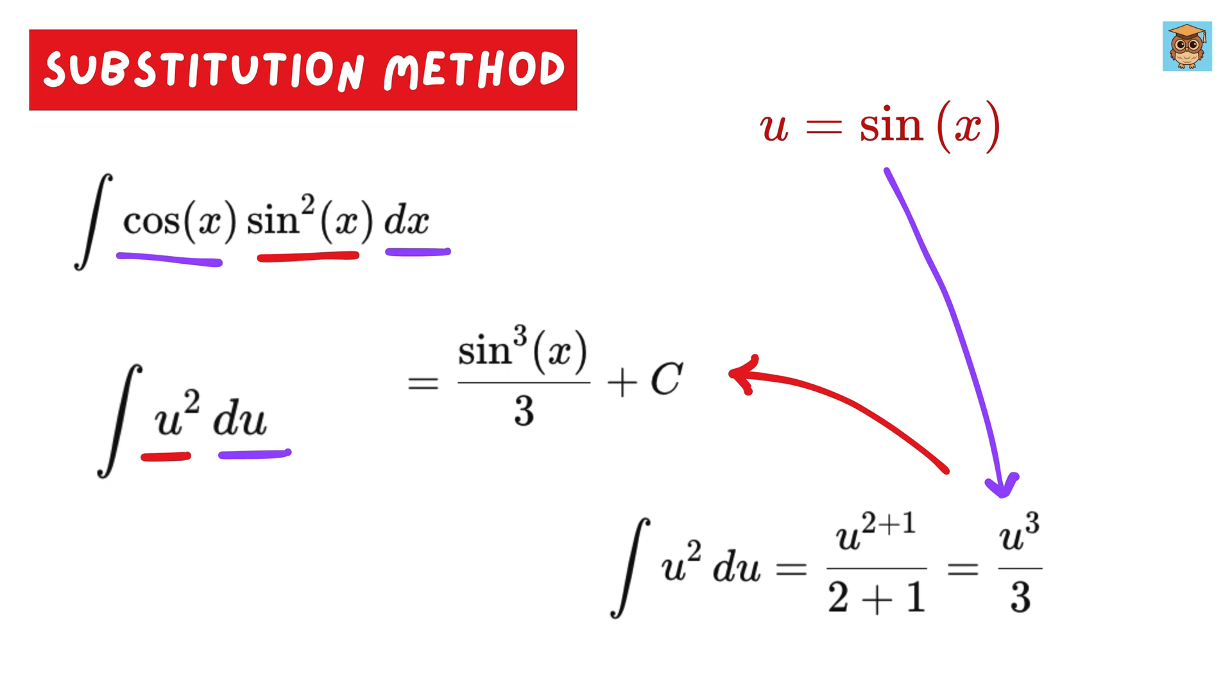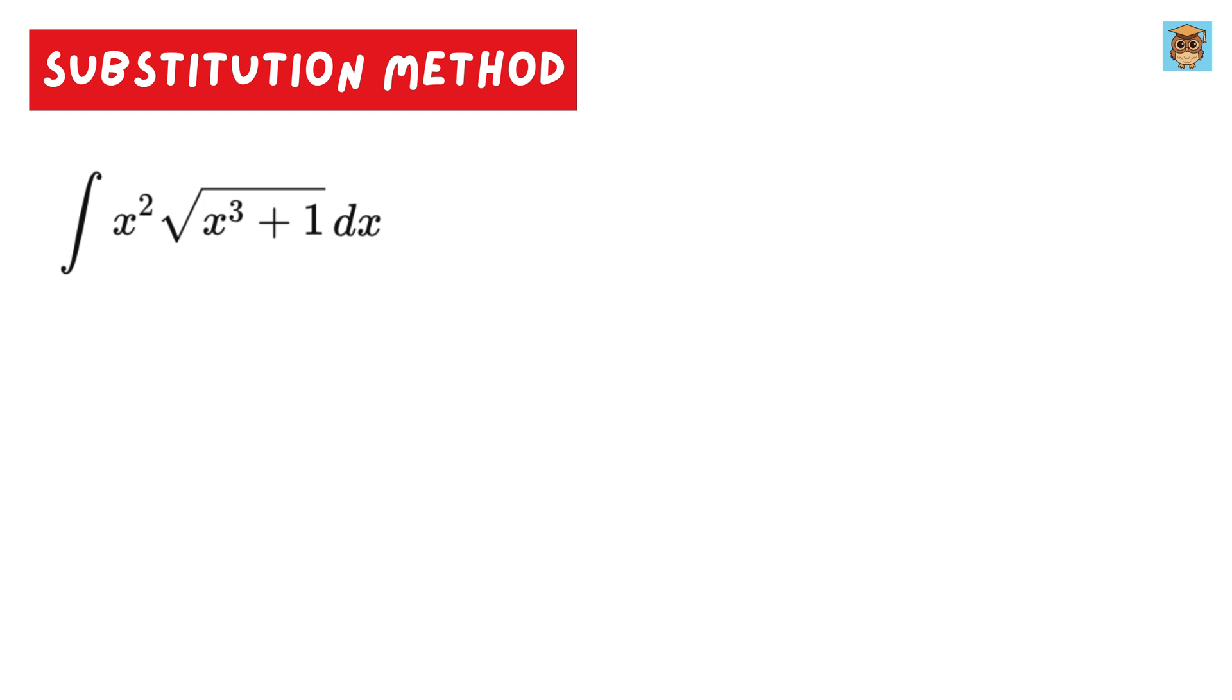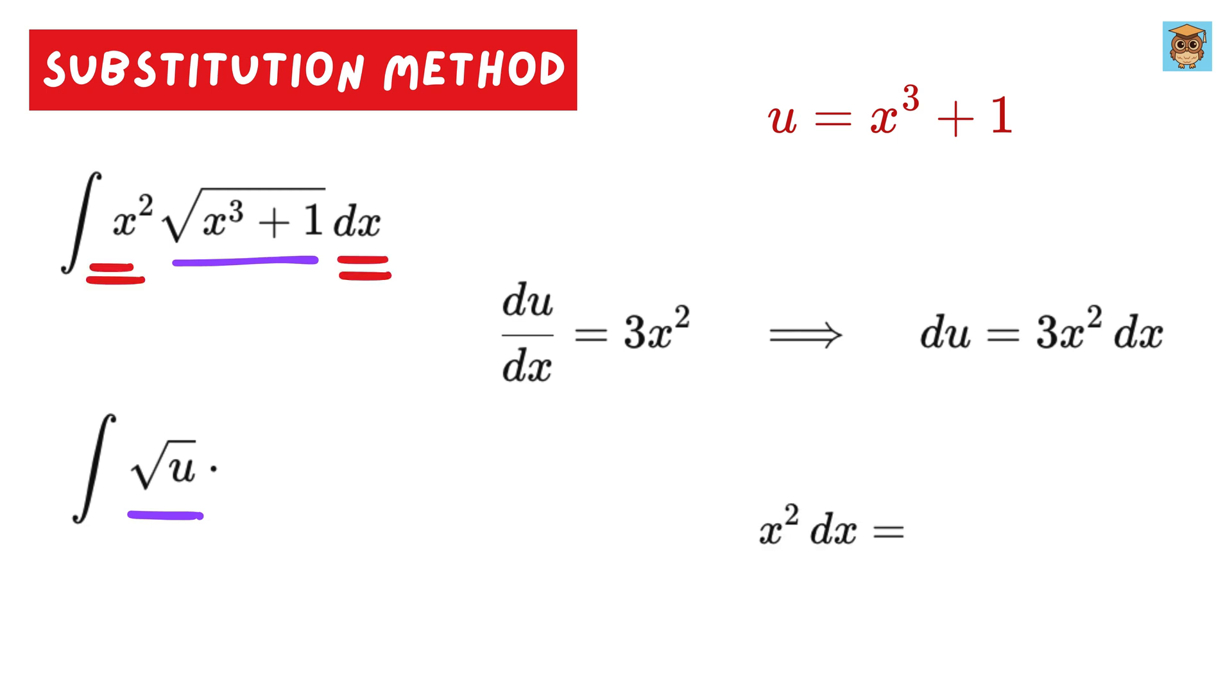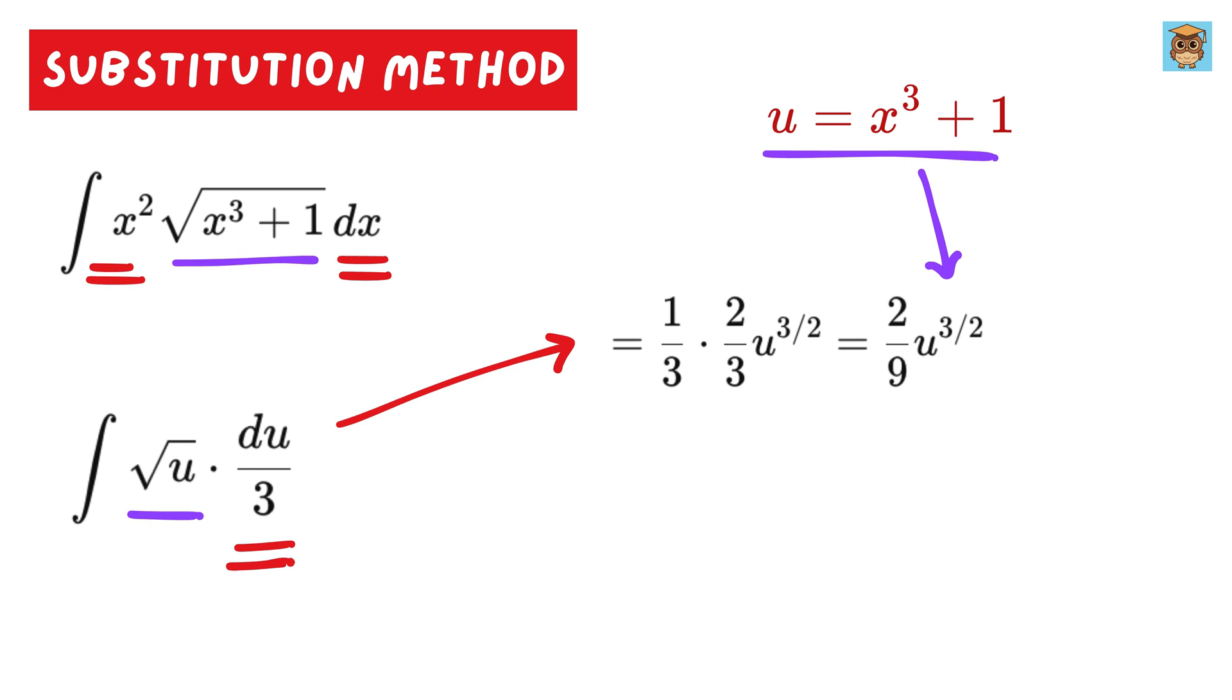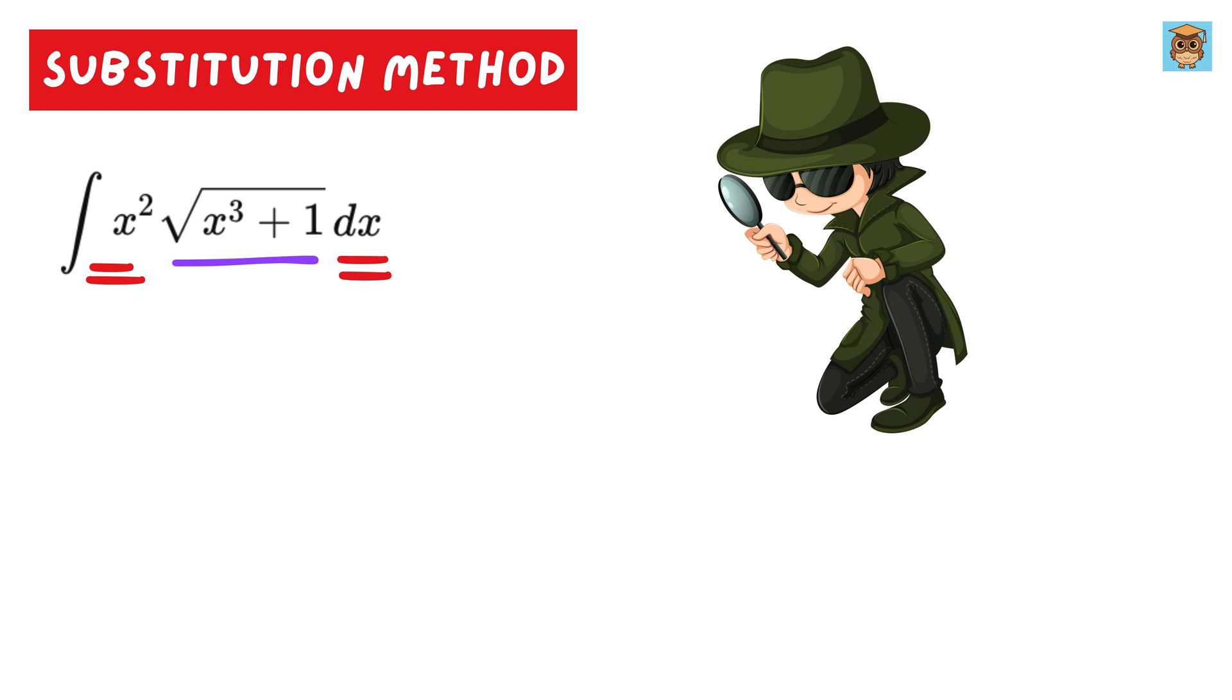Next, we will solve this question. Let x cube plus 1 equals u. So we get du equals 3x square times dx. Thus, we get integral of square root of u times this x square dx becomes du over 3. This is super simple. This will become 1 over 3 times 2 over 3 times u raised to 3 over 2. Substitute u as this to get 2 over 9 times (x cube plus 1) raised to 3 over 2 plus c. And that's it. So as you might have noticed, we use the substitution method when a part of the integral looks like the derivative of another part, allowing you to simplify it into an easier form.